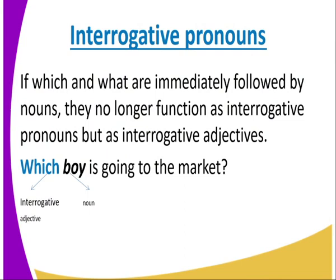Note: if 'which' and 'what' are immediately followed by nouns, they no longer function as interrogative pronouns but as interrogative adjectives. For example: 'Which boy is going to the market?' — the word 'boy' comes immediately after the interrogative pronoun 'which,' so 'which' changes from being a pronoun to an interrogative adjective because it is followed by a noun.